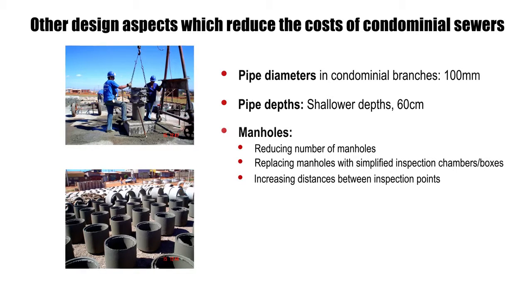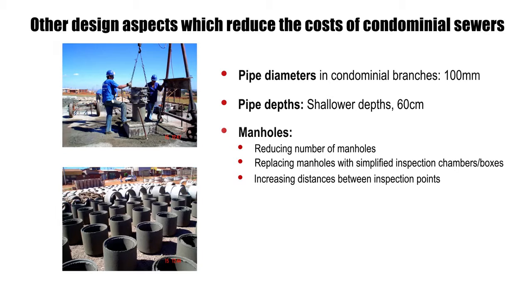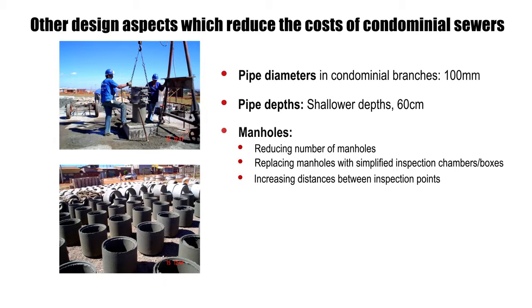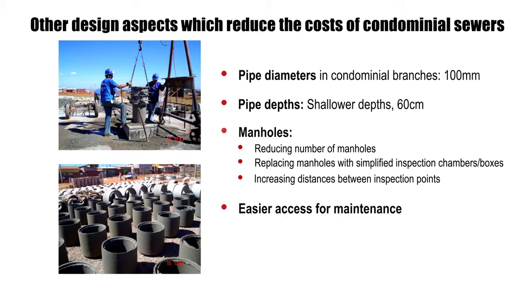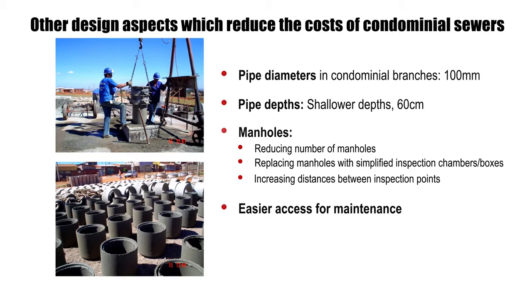In condominial sewerage systems, the number of costly manholes is reduced and they are replaced by simplified forms called inspection chambers. These factors not only reduce the cost of sewers but also provide benefits during maintenance and repairs. When condominial branches are located in household yards and sidewalks, access for repair and maintenance is possible without the utility needing to break up roads and interrupt traffic.